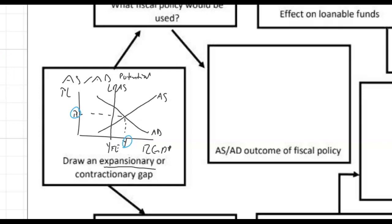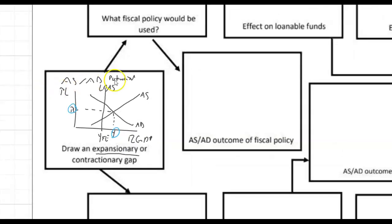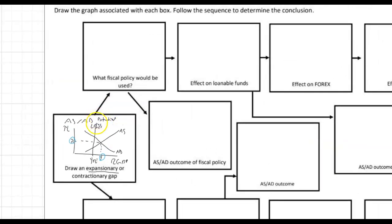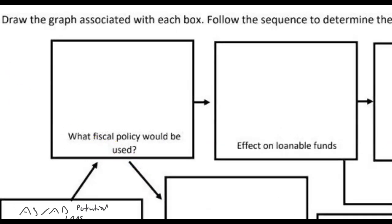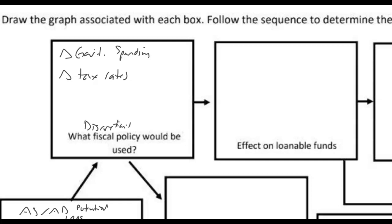After you've done that, you get to go to the next one. What fiscal policy would you use? Fiscal policies are going to be changes in government spending or changes in tax rates. We're going to assume that the fiscal policy is what is called discretionary — it is at the discretion of the voting party, U.S. Congress, or whatever country you happen to be in. Non-discretionary or automatic stabilizers — that's a different conversation; we're not going to worry about that.